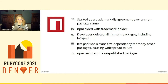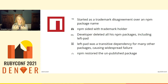LeftPad was a transitive dependency for many other packages, which caused widespread cascading failures across the internet. Many packages within Node had been created using LeftPad as a transitive dependency, so a lot of websites that used any form of Node didn't work when LeftPad was pulled from npm. npm decided to restore the unpublished package without the developer's consent in order to keep things moving, because they were in fact a company that had to make sure customers were able to get the service they needed.